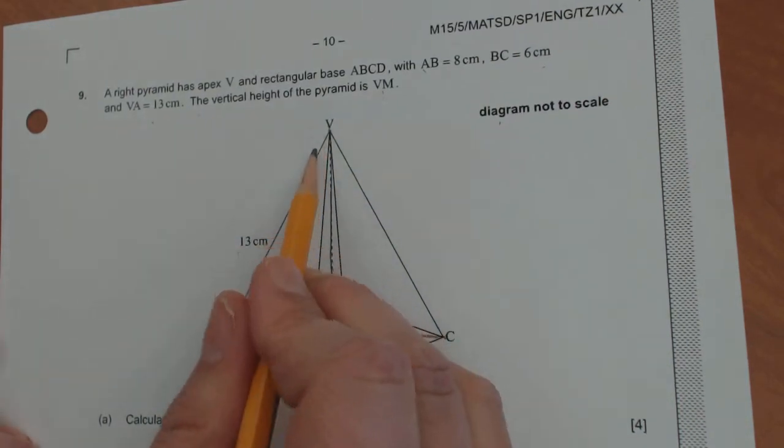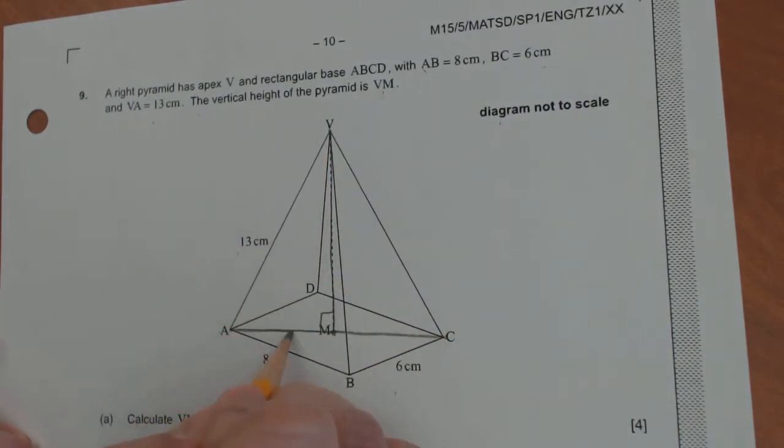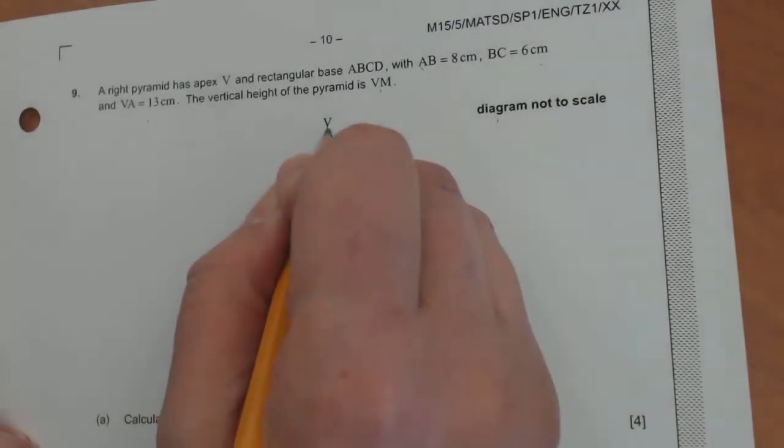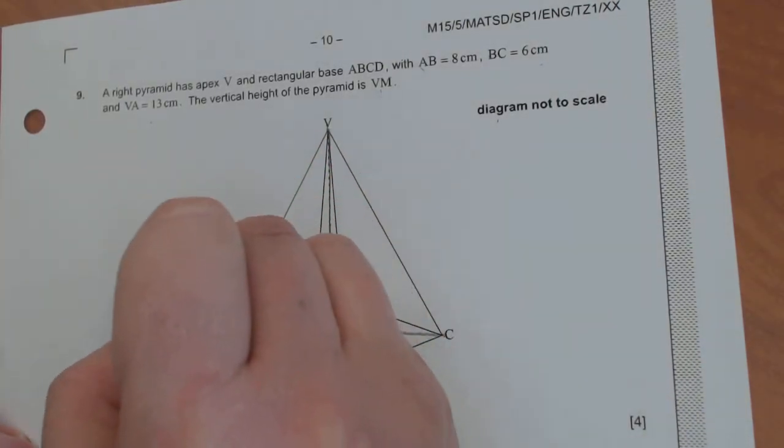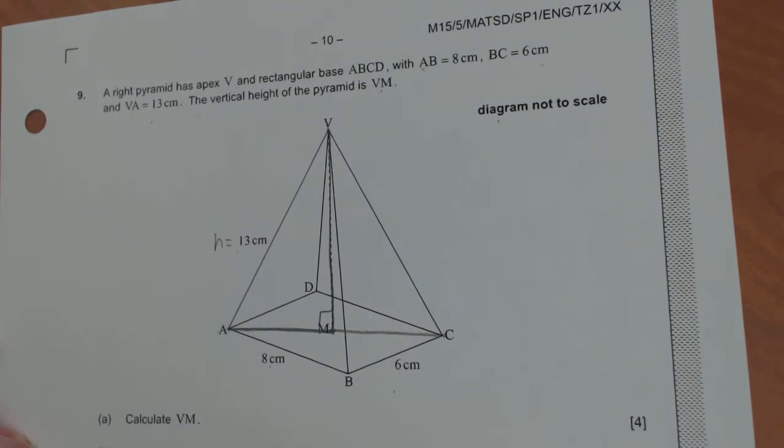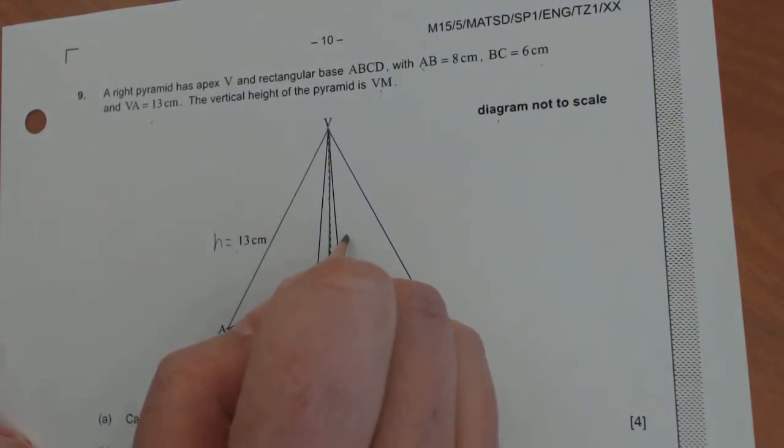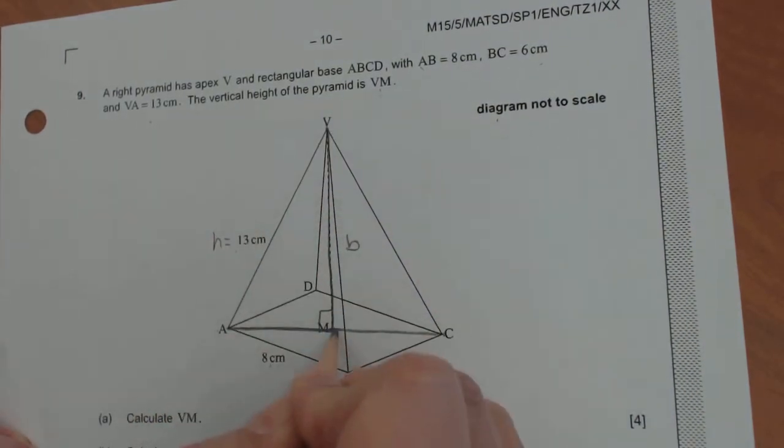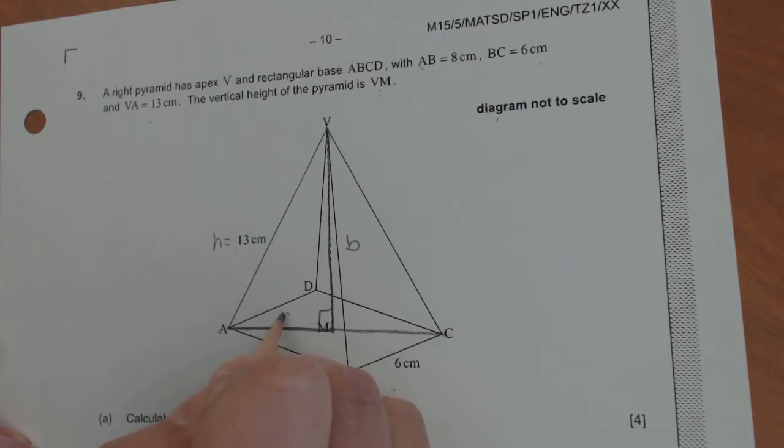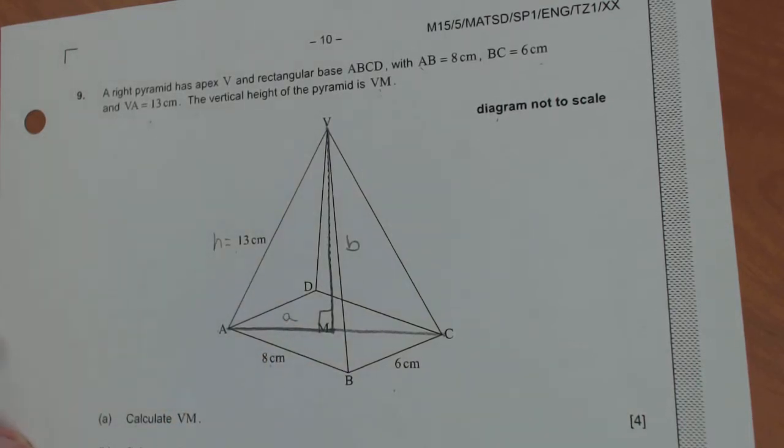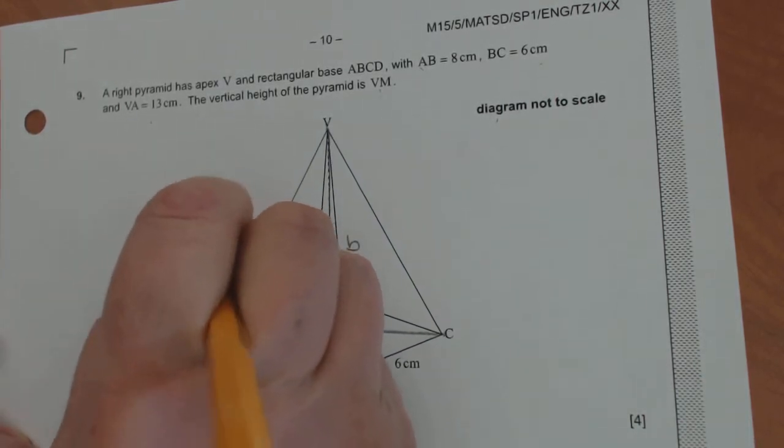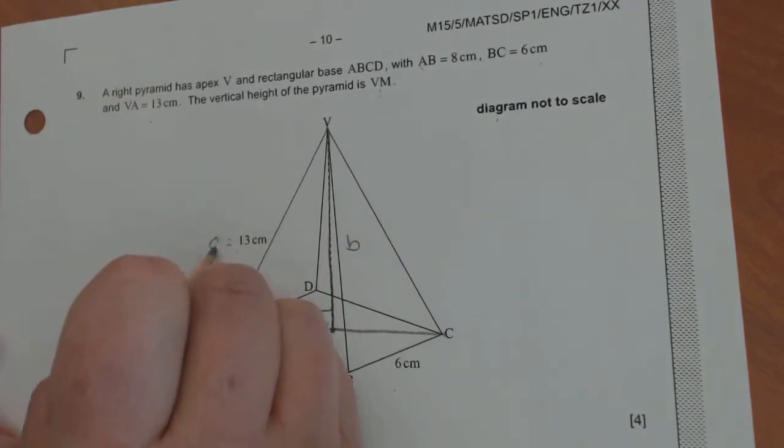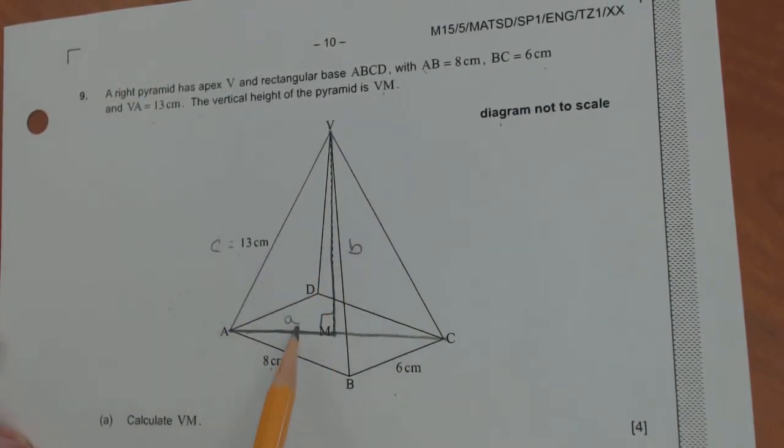So this is a nice right triangle because the height always makes a 90 degree angle with its base. We see we have the hypotenuse. We would be looking for side B, which is VM. However, we don't have A here. So the hypotenuse would be C because we're going to be doing the Pythagorean theorem. So we're actually missing two things. We're missing B and A. So we're going to have to first find A here.